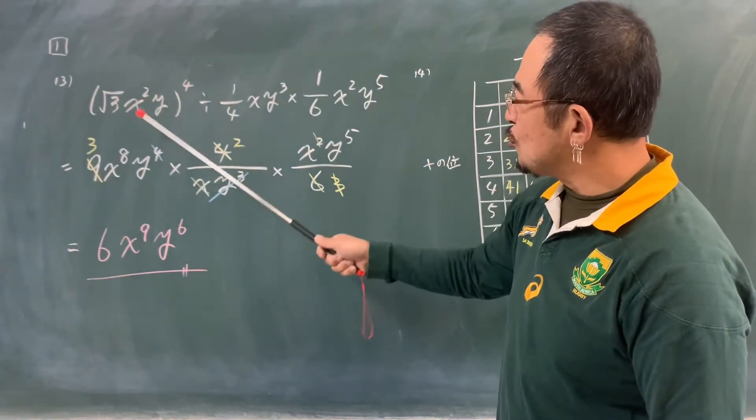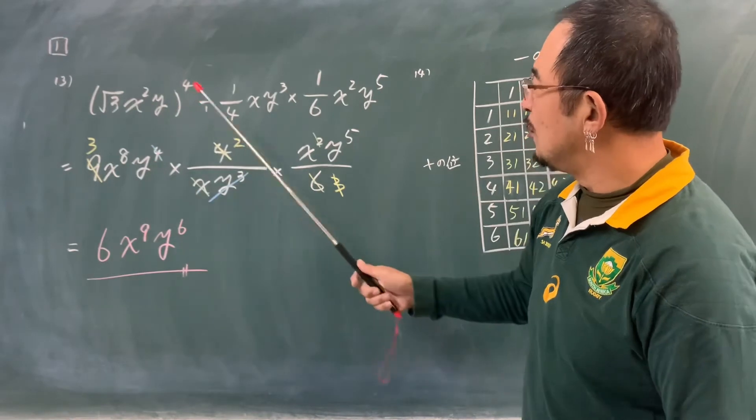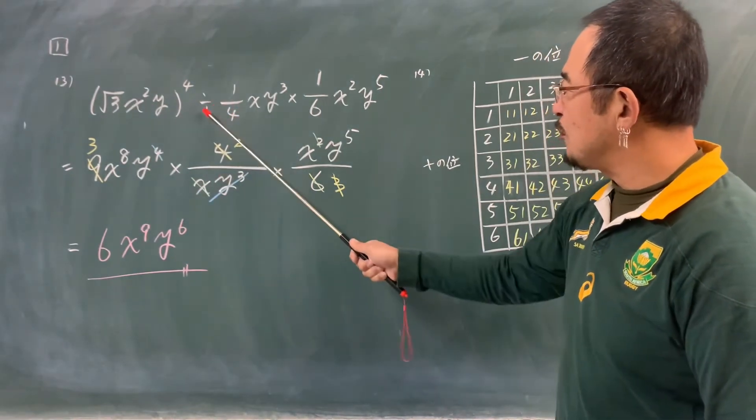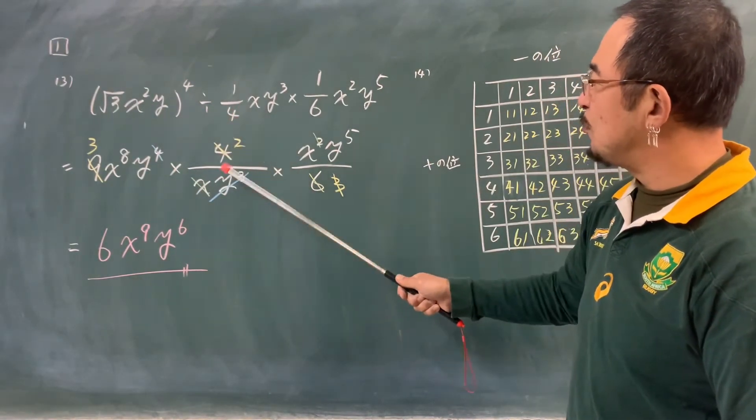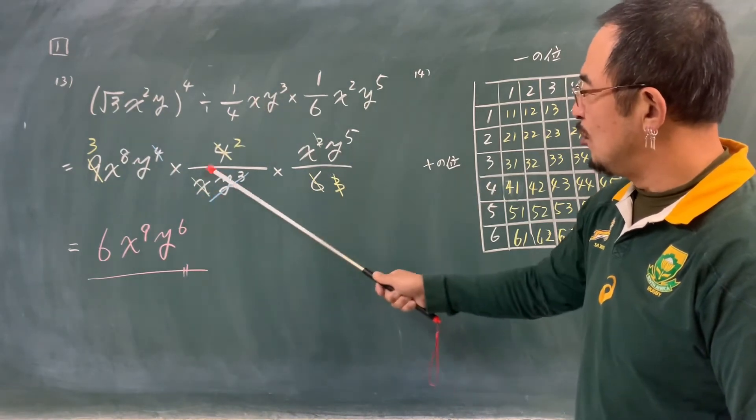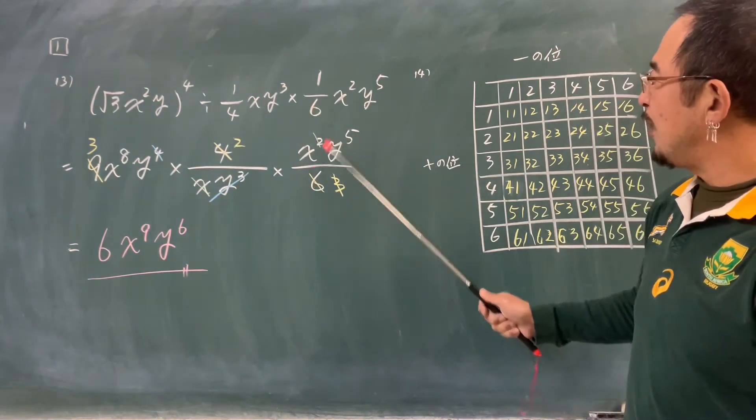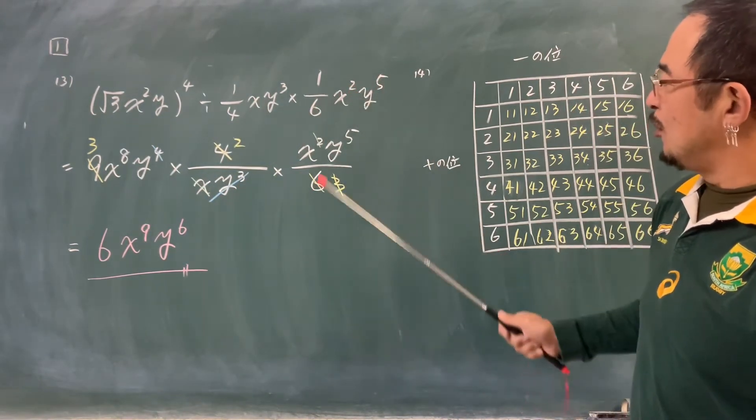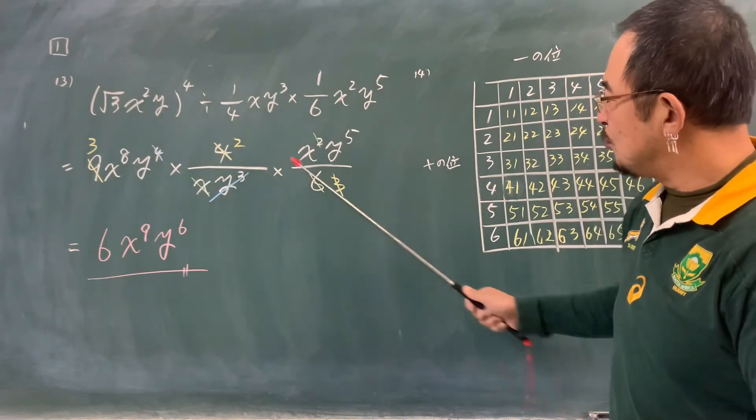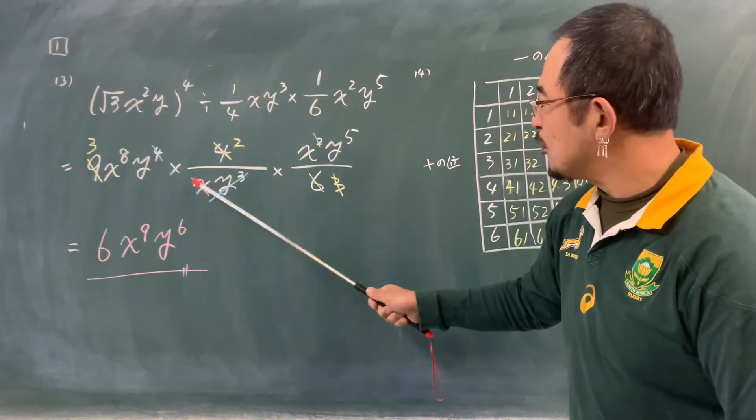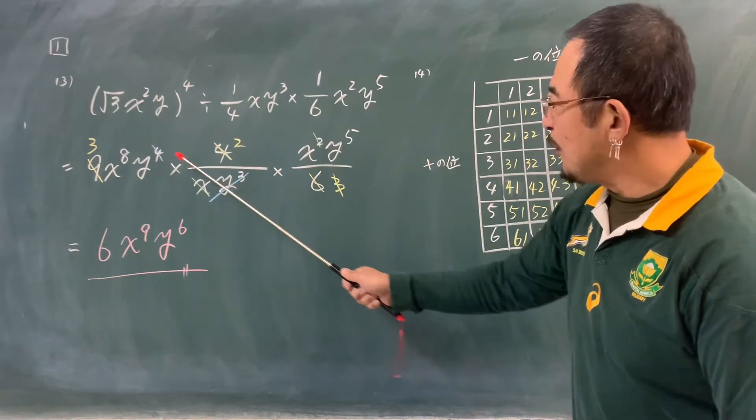括弧3、ルート3の4乗で9ですね。x2乗の4乗、x8乗、yの4乗から4分のひっくり返すので、分子に4がきて分母にxy3乗。から6分のが分母で分子はx2乗y5乗。あとは約分をして、xも約分をしてyも約分をして残るのが6x9乗y6乗となります。